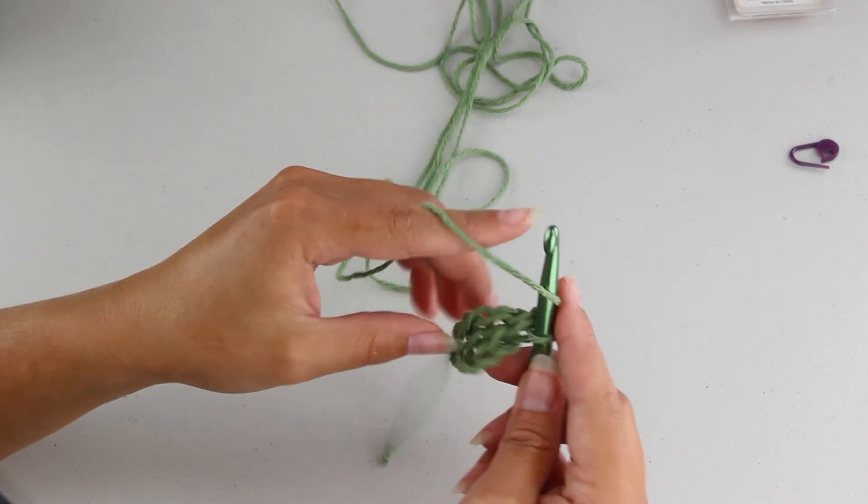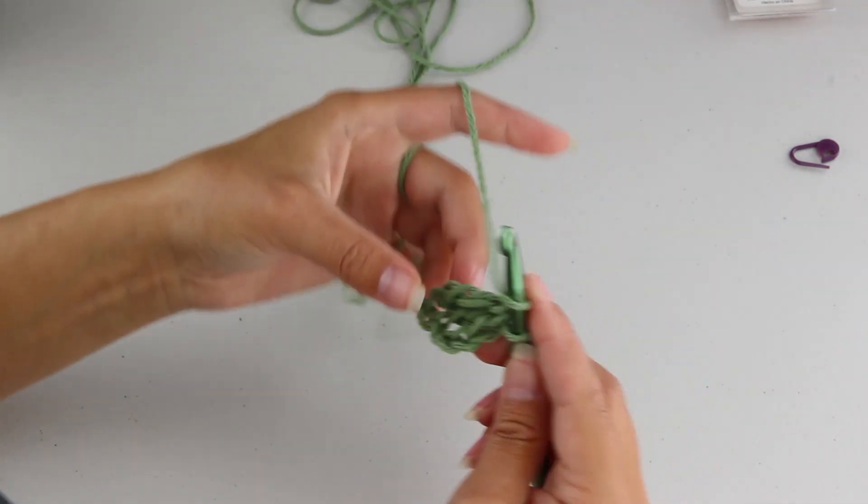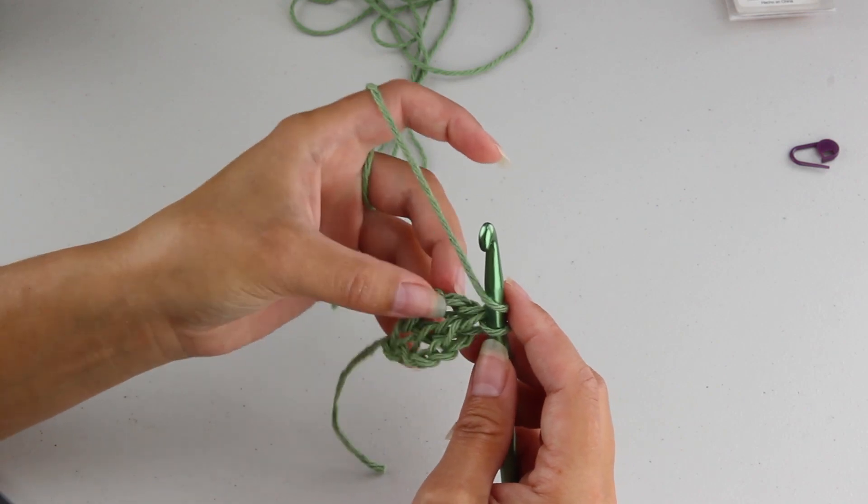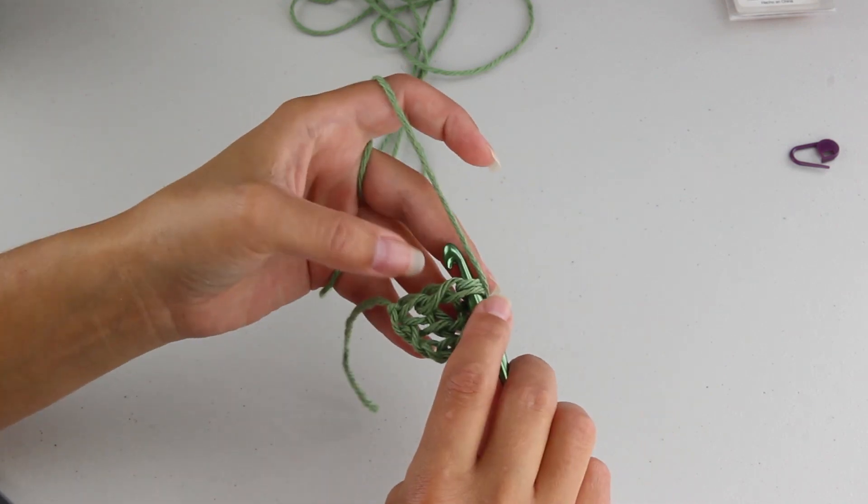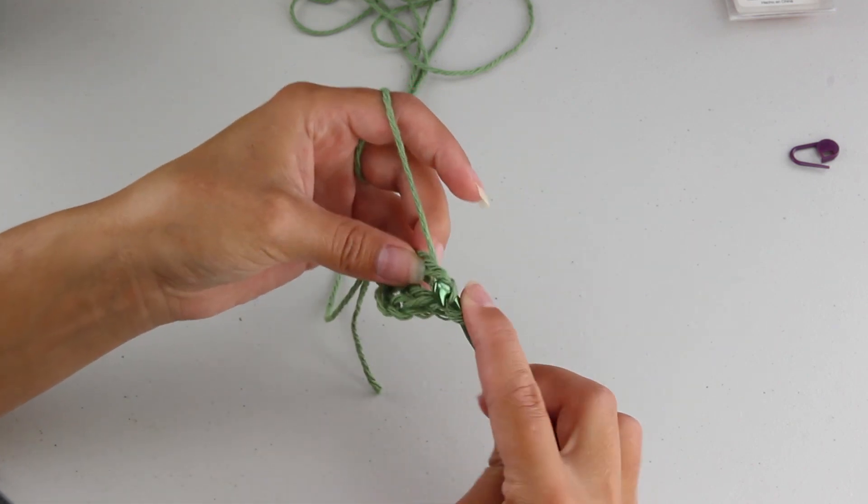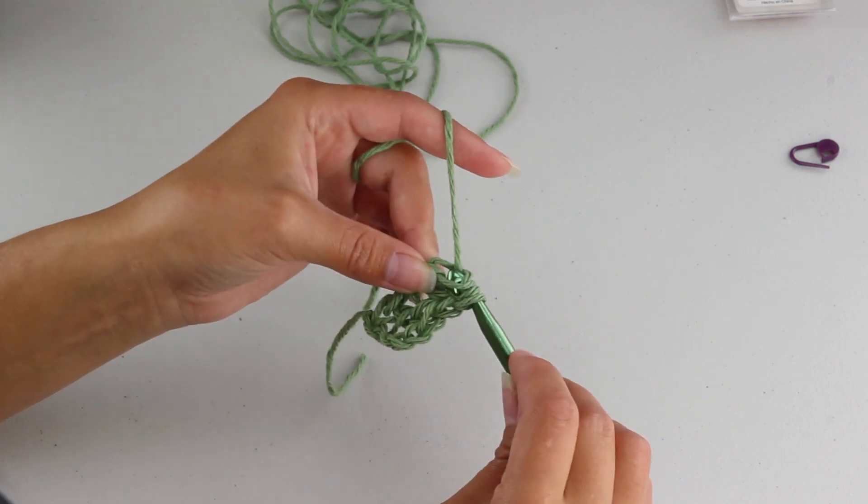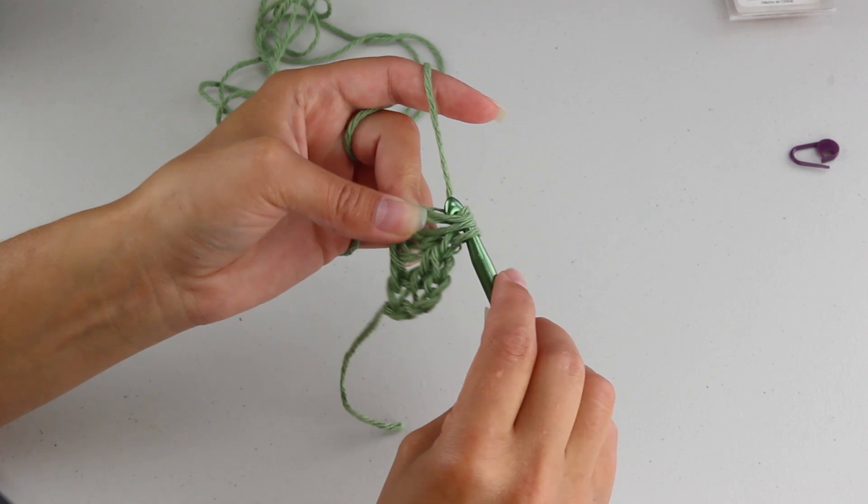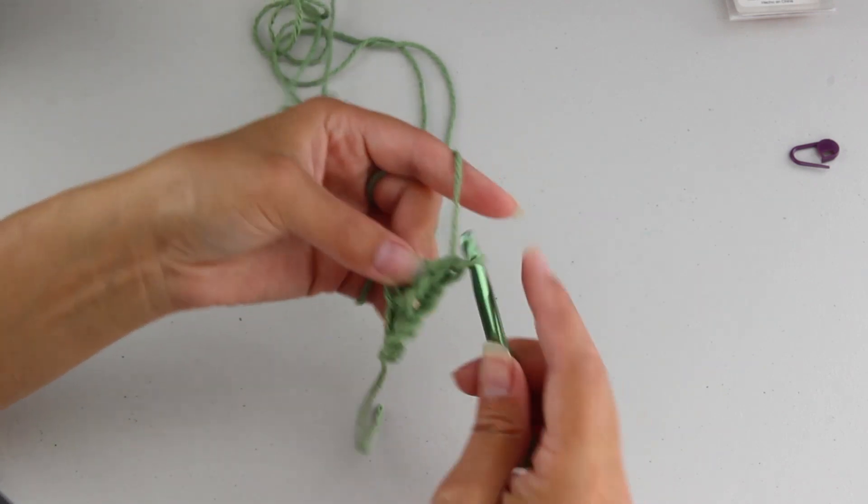So again, we're going to yarn over. We're going to insert our hook. Yarn over, pull through. Yarn over, pull through one loop. Yarn over, pull through two. Yarn over, pull through the last two.